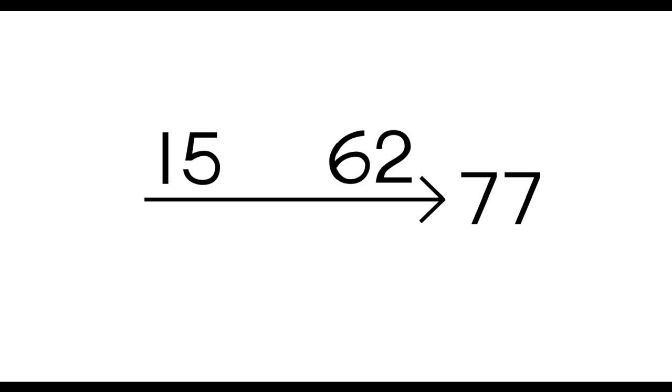Get ready for our first part. We have a number family arrow with two little numbers, 15 and 62, and our big number is 77. Say your first plus problem with me: 15 plus 62 equals 77. The other plus would be 62 plus 15 equals 77. Do the minus with me: 77 minus 62 equals 15. And the other minus would be 77 minus 15 equals 62.